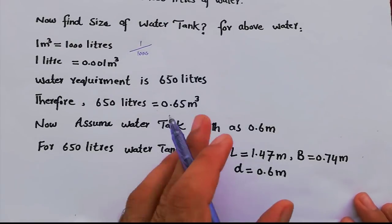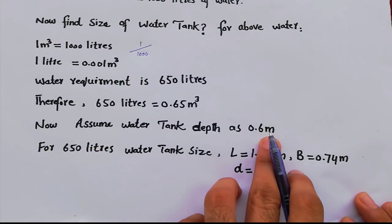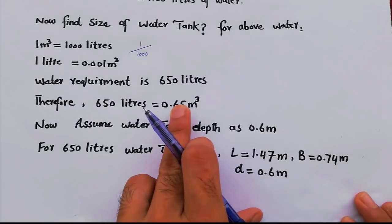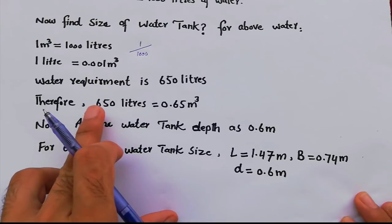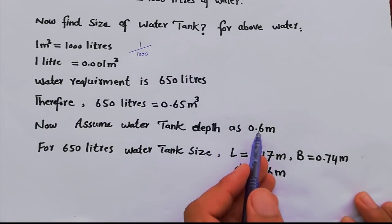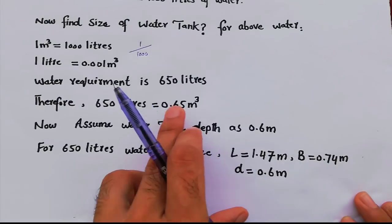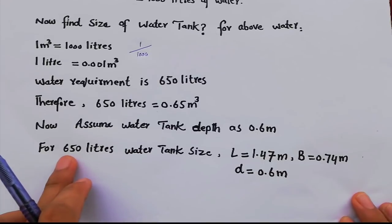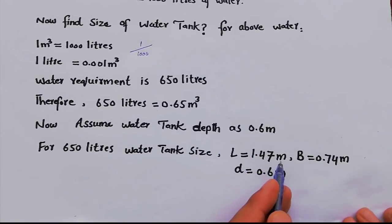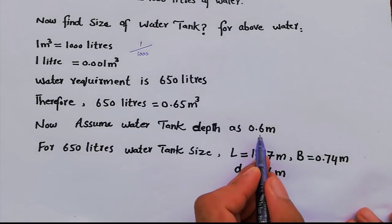Now assume the water tank depth. Suppose I take the depth as 0.6 meters — you can change this depending on your calculation. We need to find length and breadth to complete this volume of 0.65 m³. For 650 liters, the tank size will be: length = 1.47 m, breadth = 0.74 m, and depth = 0.6 m.